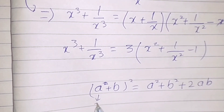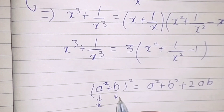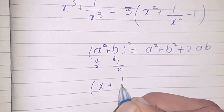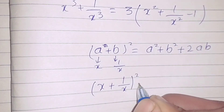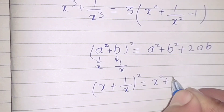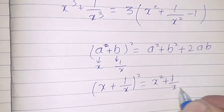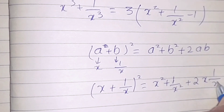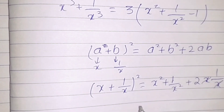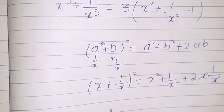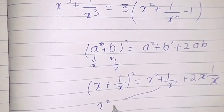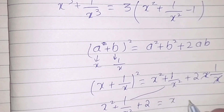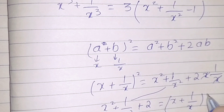Replace a by x and b by 1 by x. So we have x plus 1 by x whole square is equal to x squared plus 1 by x squared plus 2, since x times 1 by x cancels to 1.